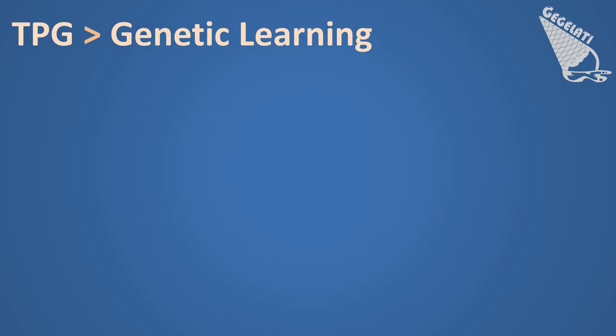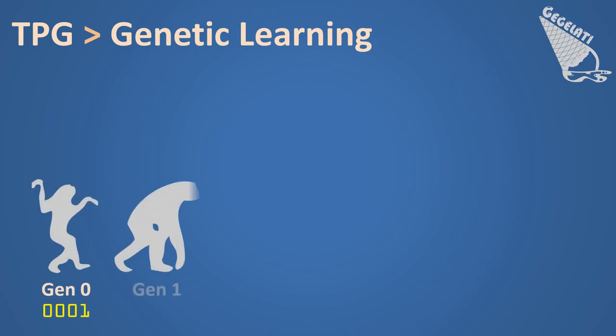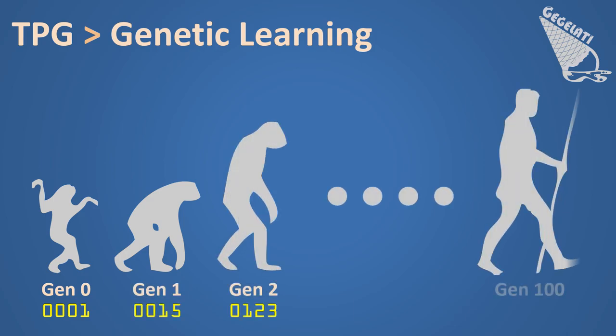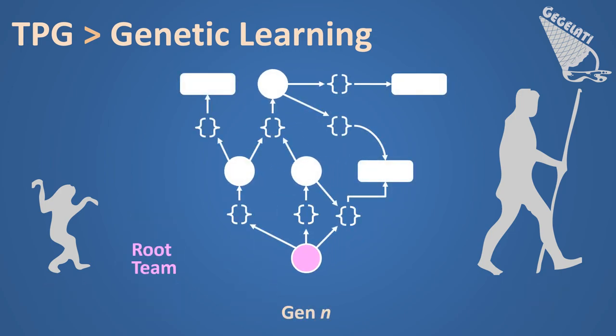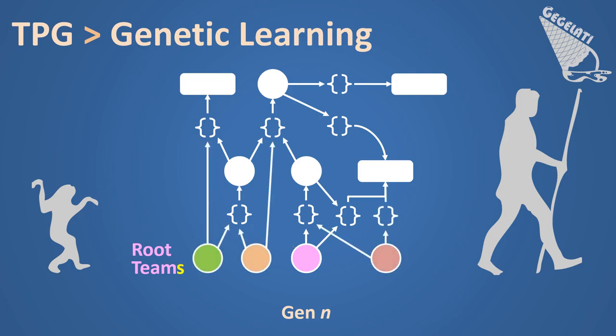In order to build a TPG graph capable of setting new high scores in your favorite video game, a genetic learning algorithm is used. The basic principle of genetic learning algorithms is to simulate an evolutionary process of an artificial intelligence over multiple generations. Generation after generation, the evolution process ensures that the AI improves its performance within a learning environment. During the learning process, instead of a single root team, the TPG graph possesses several ones. Each root vertex represents a different starting point for executing the graph, each leading to a potentially completely different behavior of the AI.